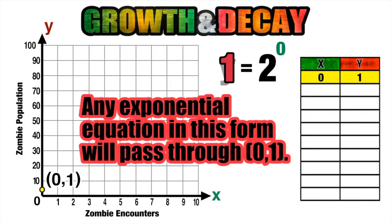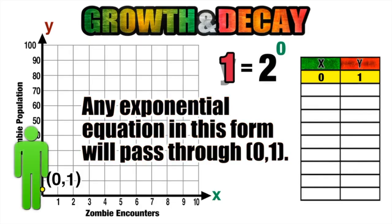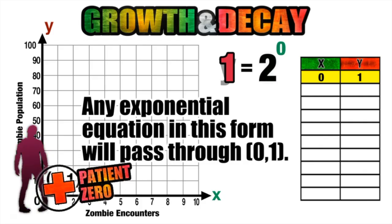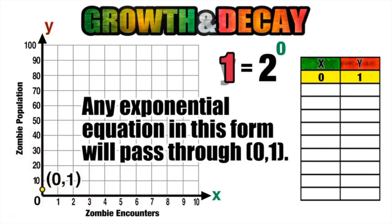So these kinds of graphs do not pass through the origin, they always pass through the point zero one. And we can reinforce this concept by thinking about that term patient zero being assigned to the first person who gets infected. Again, because anything to the zero power is going to be one.